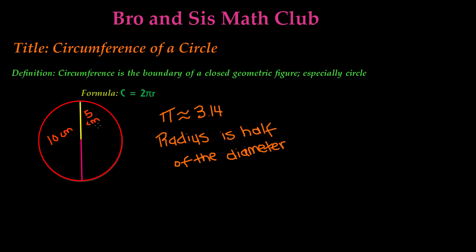So that means now that we have all of our values, we can go ahead and calculate the circumference of this circle. So we need to multiply 2 times 3.14, which is pi, times 5, which is the radius.